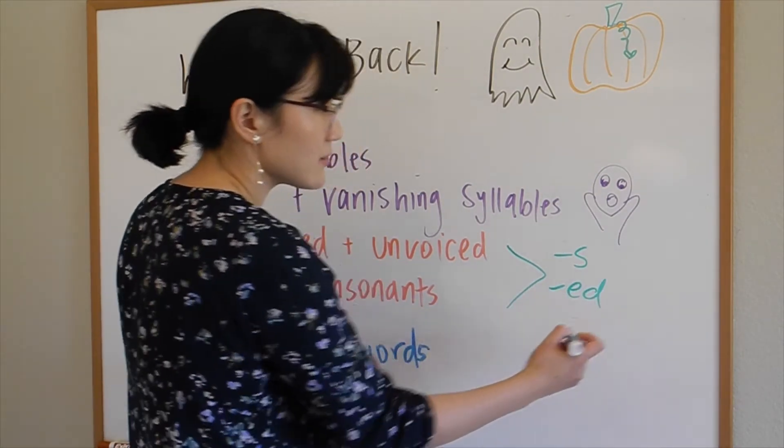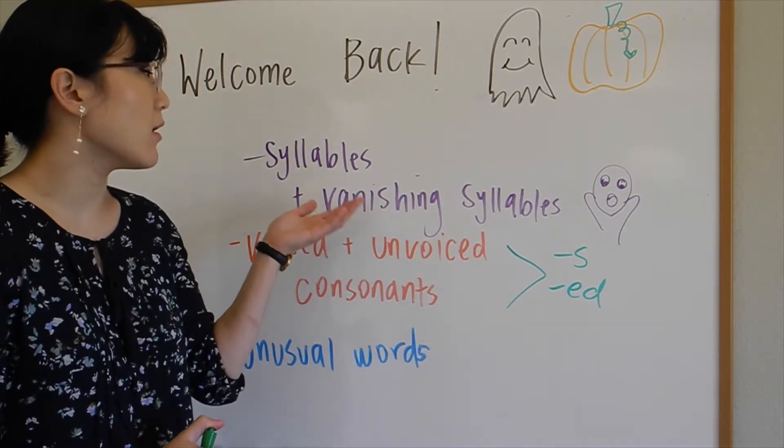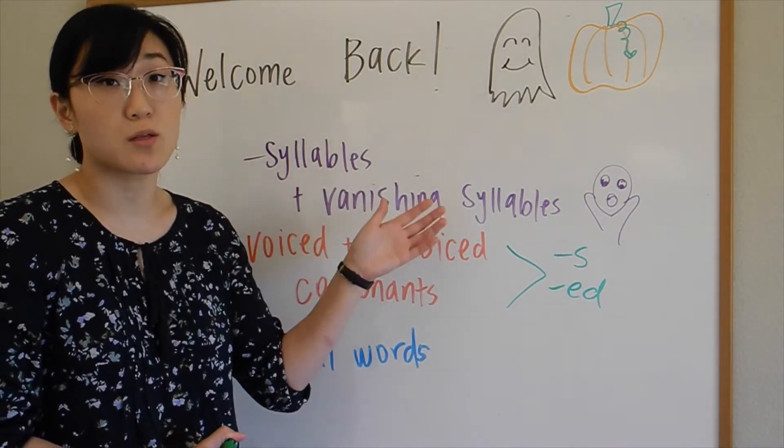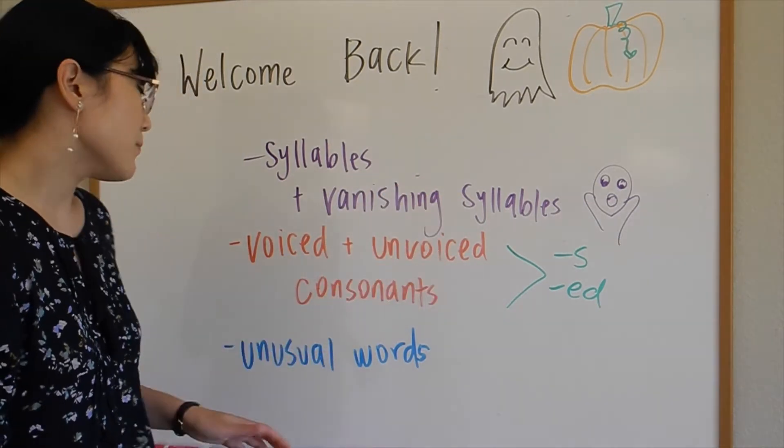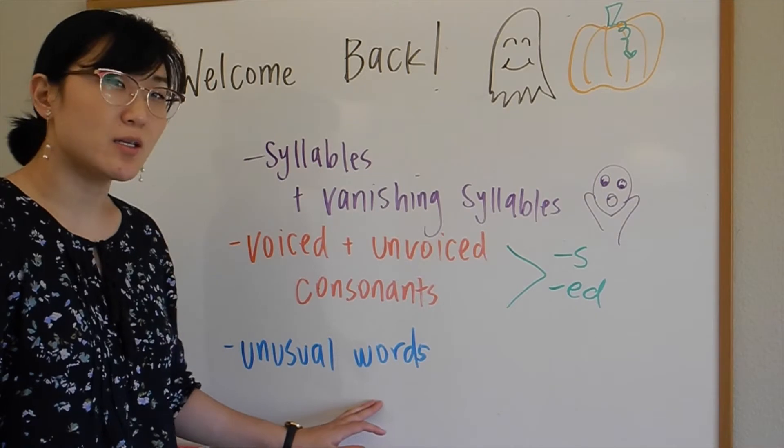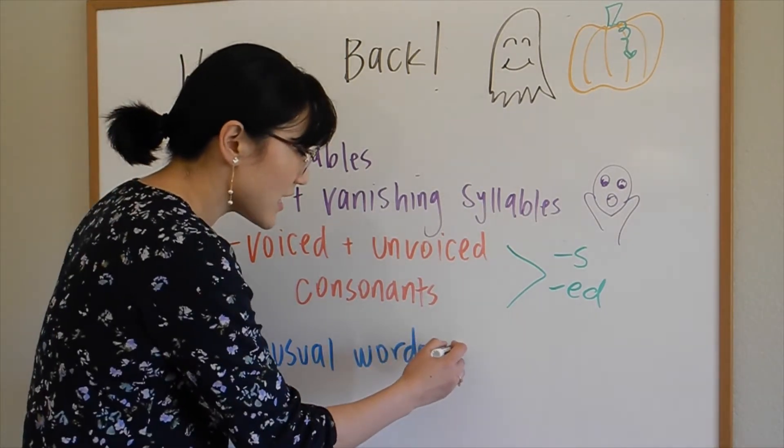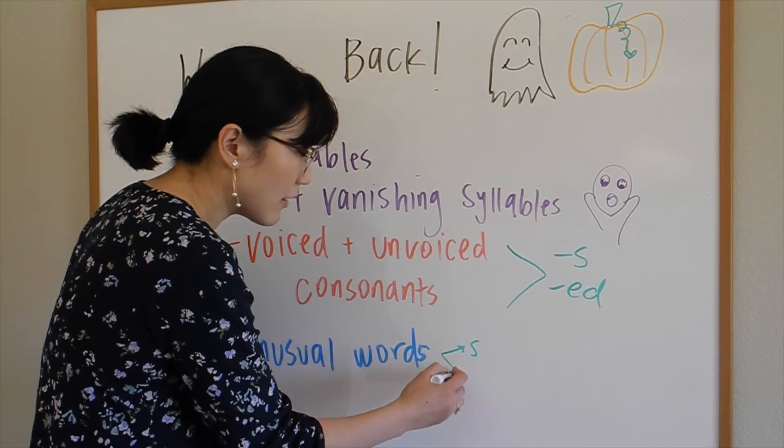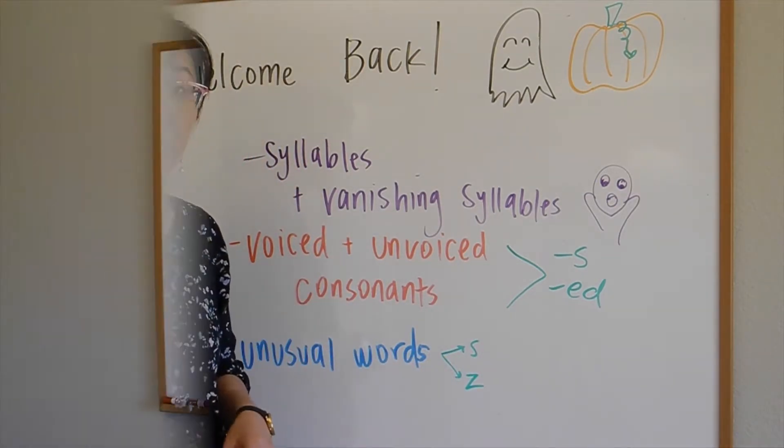We will also be covering voiced and unvoiced consonants because this is very important, especially for the simple present with verbs that end in 's' and the simple past with verbs that end in 'ed'. Lastly, we're going to be talking about some unusual words that change in the 's' and 'z' ending depending on how it's used, either as an adjective or as a verb.